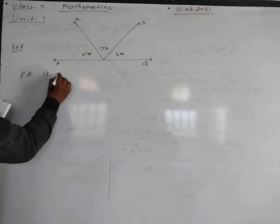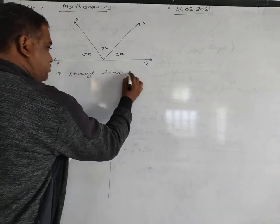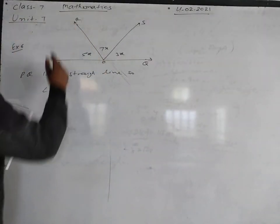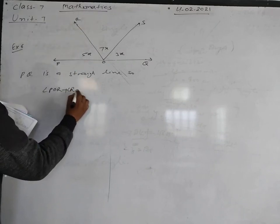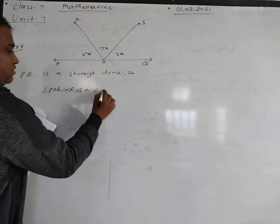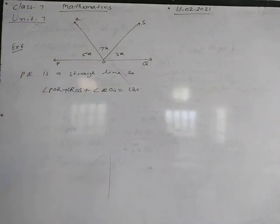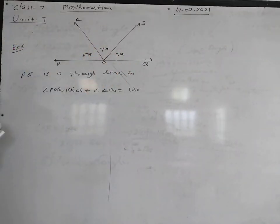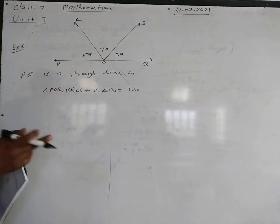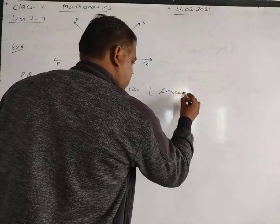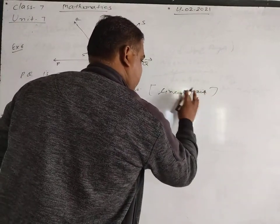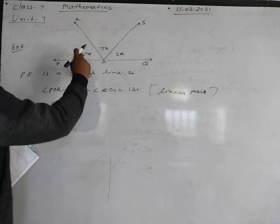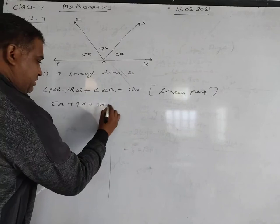Since PQ is a straight line, angle POR plus angle ROS plus angle QOS is equal to 180 degrees. These angles form a linear pair, so 5x plus 7x plus 3x is equal to 180 degrees.